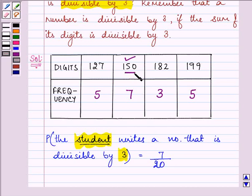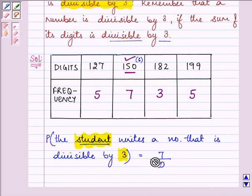Because if you add all these numbers, that is 1 plus 5 plus 0, it is coming out to be 6 and 6 is exactly divisible by three. So the probability that the student writes a number that is divisible by three is 7 out of the 20 students.